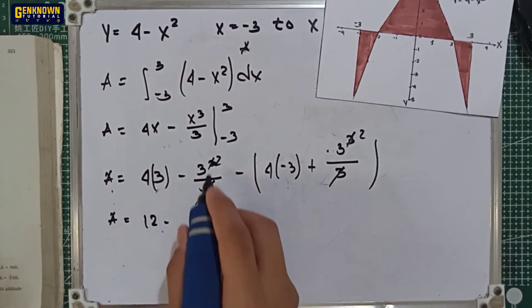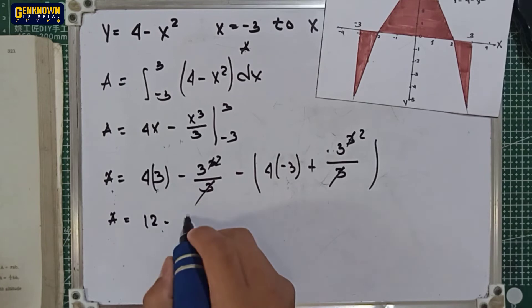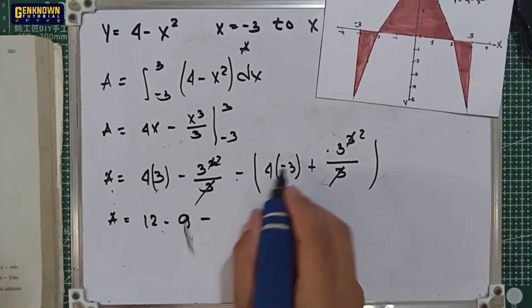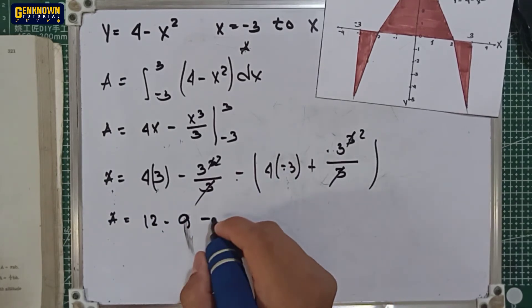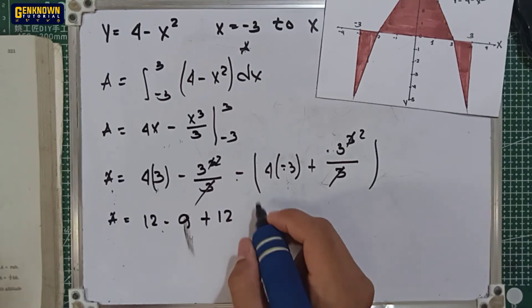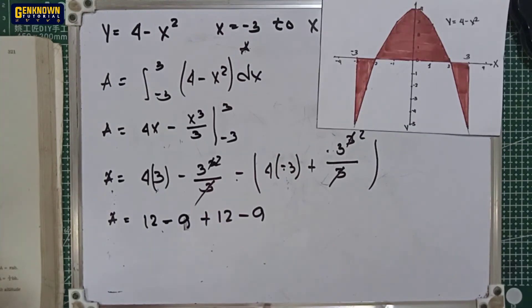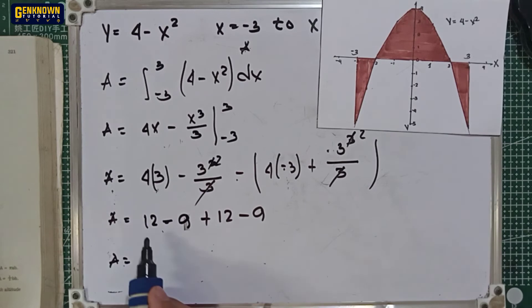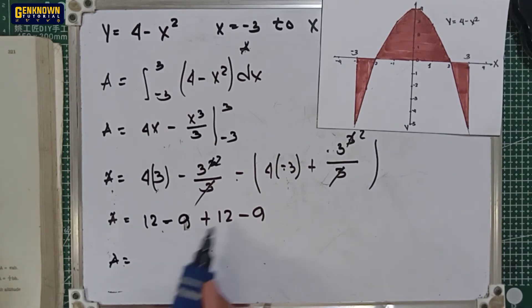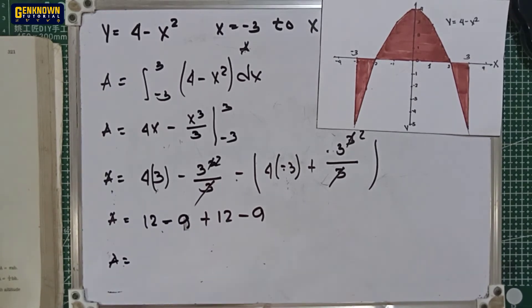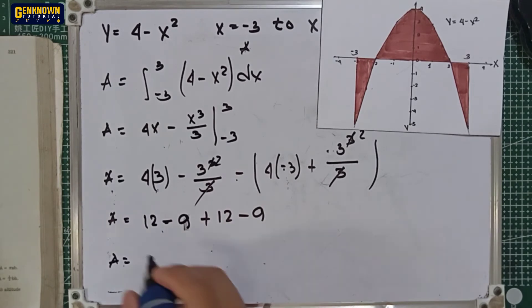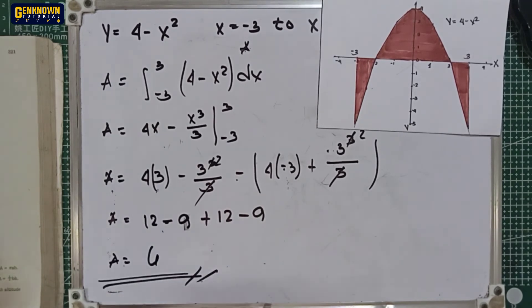So area is equal to 12 minus minus 9, minus negative multiplied by negative, that's positive. Positive 12, negative multiplied by positive is negative, negative 9. So area is equal to 12 plus 12 is 24 minus 9 minus 9, or 24 minus 18 is equal to positive 6. So this is the final answer.